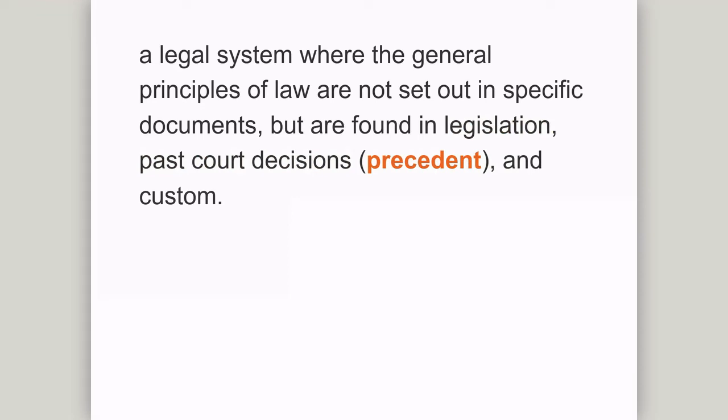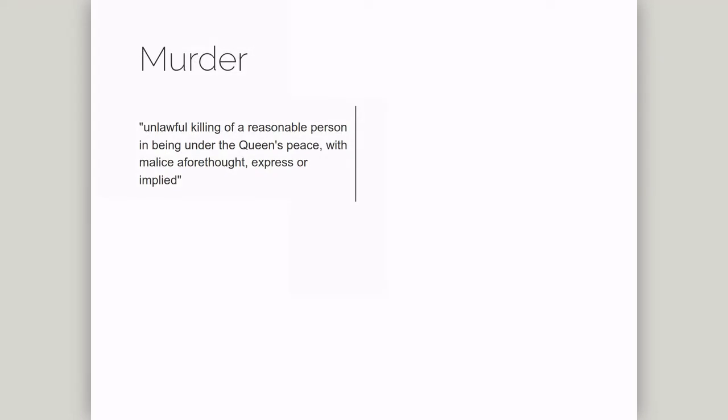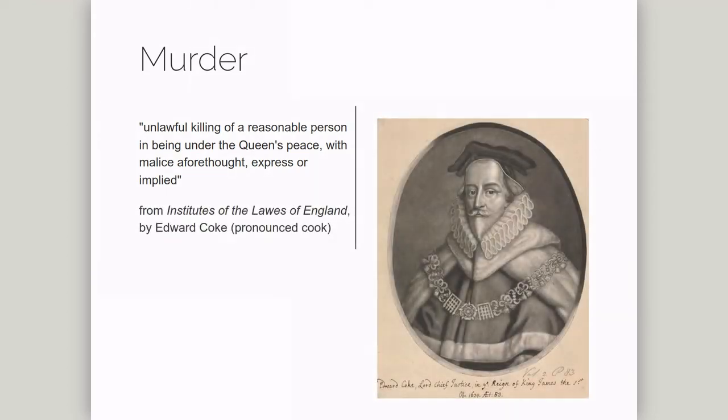Let me give you an example. In English law, murder is defined as unlawful killing of a reasonable person in being under the Queen's Peace with malice aforethought, express or implied. This definition isn't found in a piece of legislation and it's not contained in the Homicide Act of 1957. Rather, it's found in a book, Institutes of the Laws of England, written by Edward Coke, a judge in the Elizabethan period. This explains why the definition uses slightly unusual language like malice aforethought.